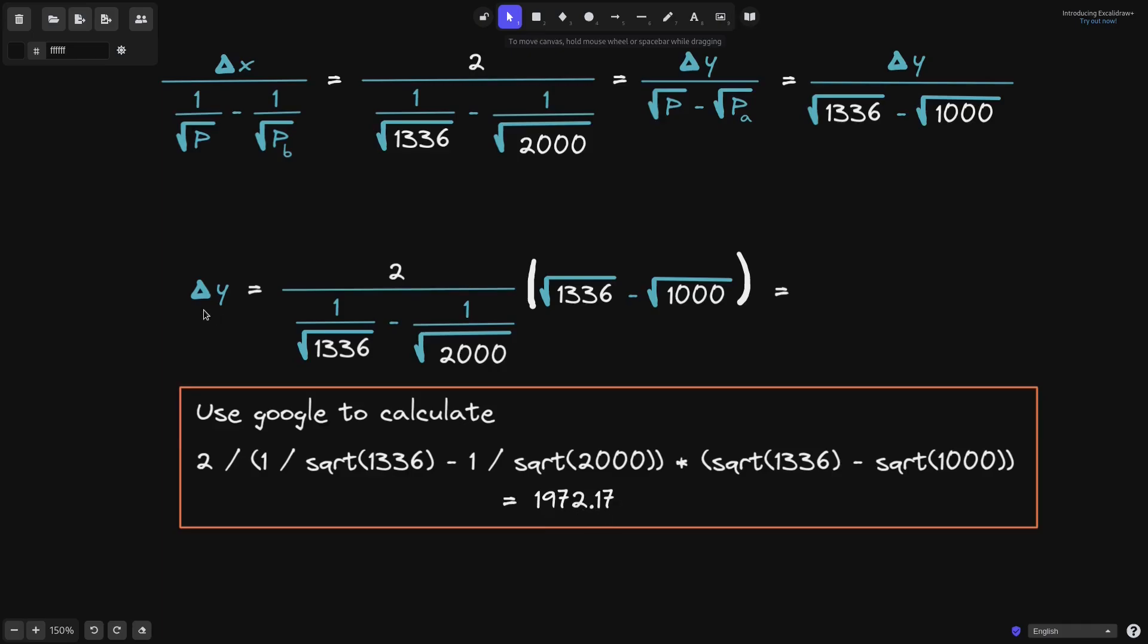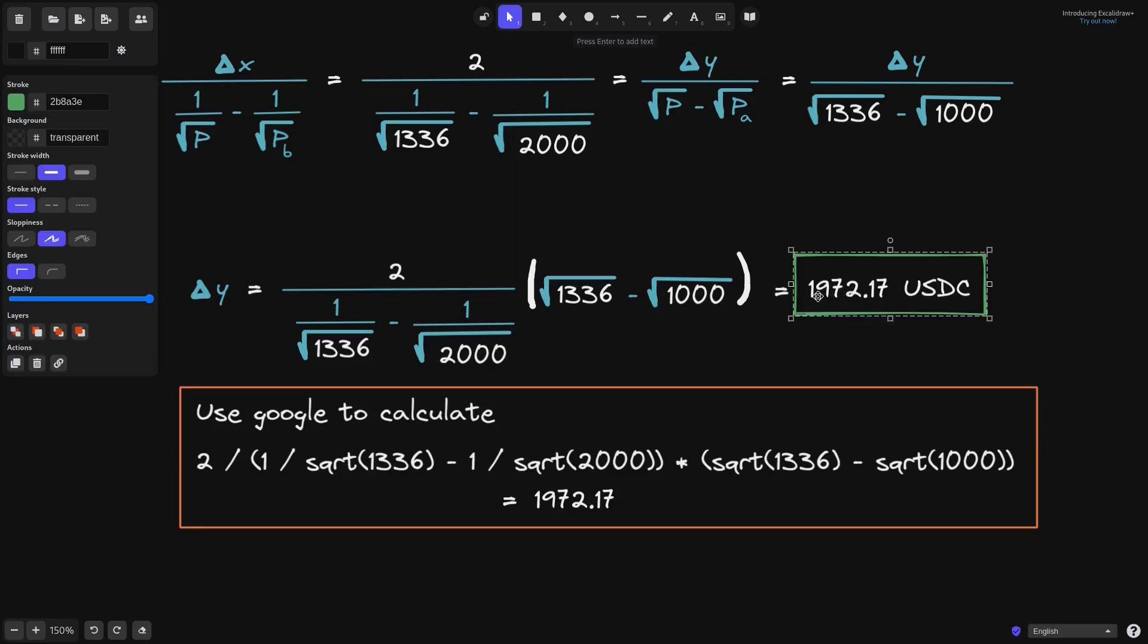So I'll copy this and then say this expression is equal to 1,972.17. And we have our final answer that delta Y will be equal to 1,972.17. We got here by using Google to calculate this expression. This 1,972.17 means that if we were to put 2 ETH where the current price is 1,536 in the price range between 2,000 and 1,000, then we will need 1,972.17 USDC.